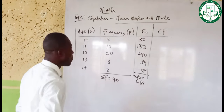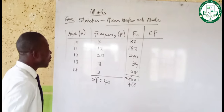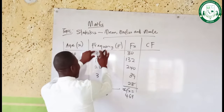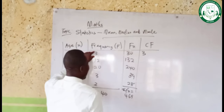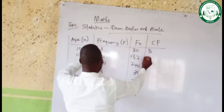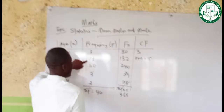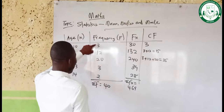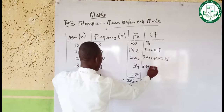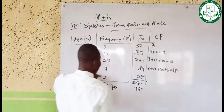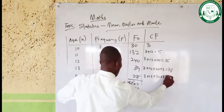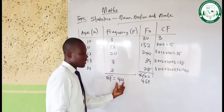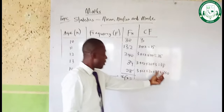Now, because it's on the grouped data, how do we get CF? CF means cumulative frequency — we cumulate the frequency. The first cumulative frequency is just 3. The second is 3 plus 12 equals 15. The next is 3 plus 12 plus 20 equals 35. The next is 3 plus 12 plus 20 plus 3 equals 38. And the last one: 3 plus 12 plus 20 plus 3 plus 2 equals 40. The total cumulative frequency, which is 40, should equal our summation F.